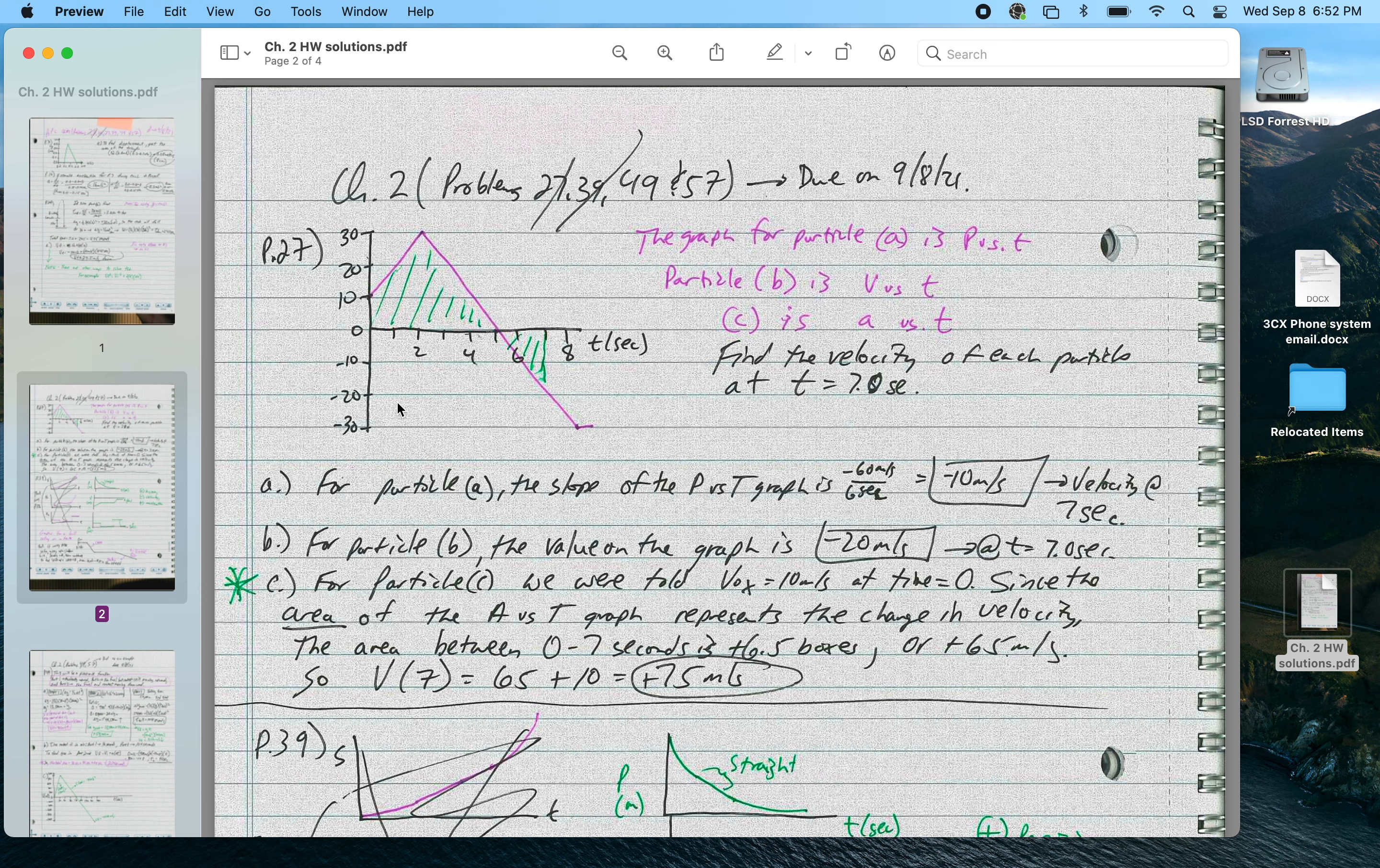For a velocity graph, we look at the value at 7 seconds, that is negative 20 meters per second. For an acceleration graph, we needed to know the initial velocity, which is 10 meters per second.